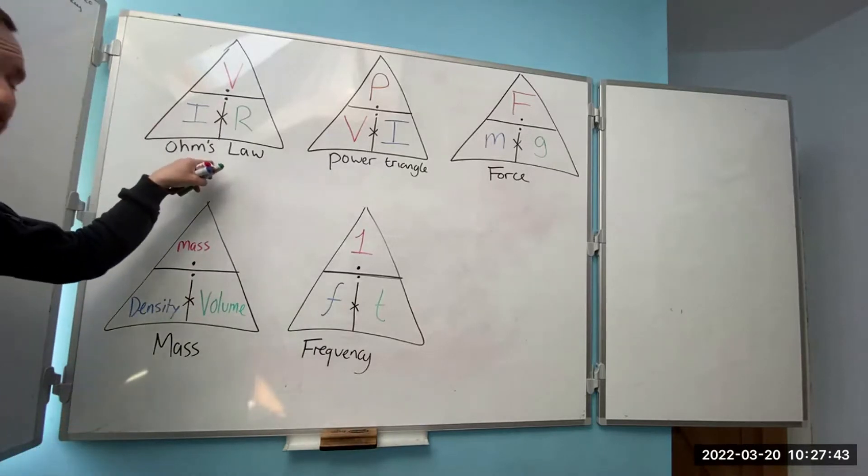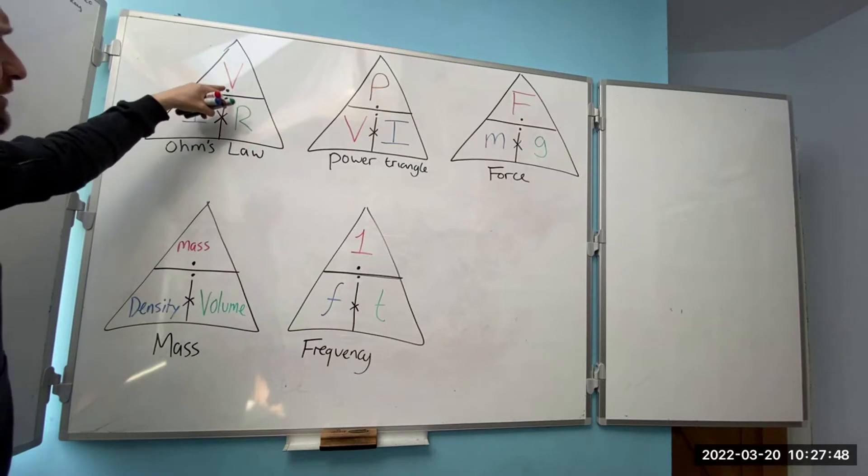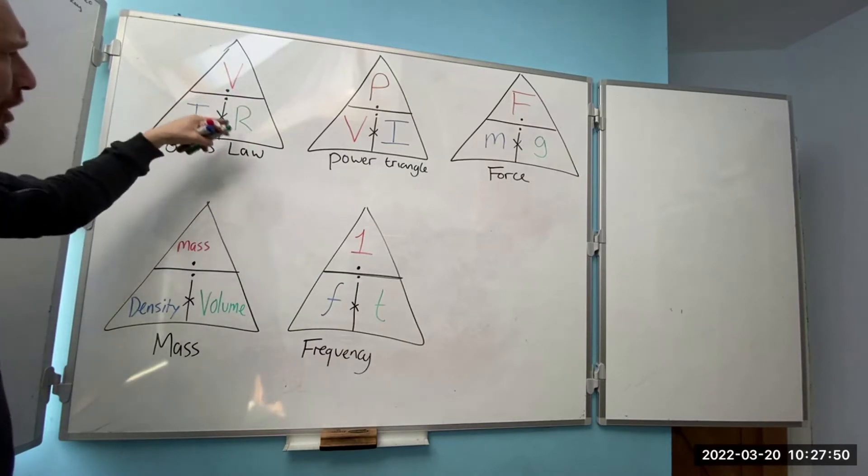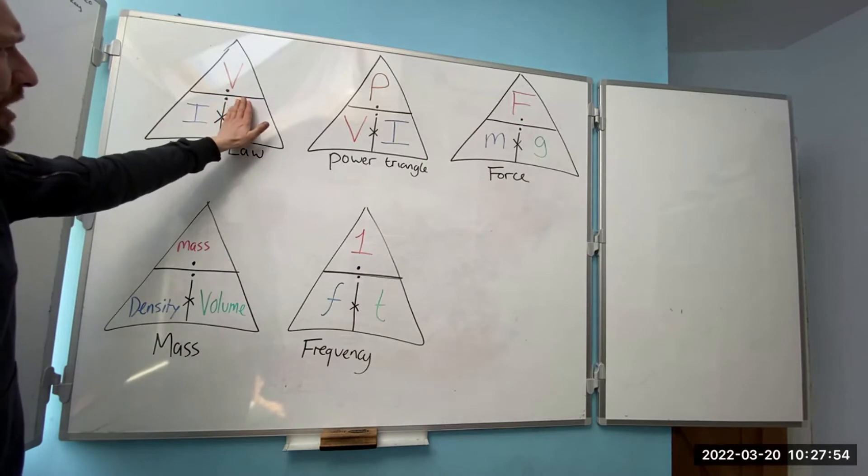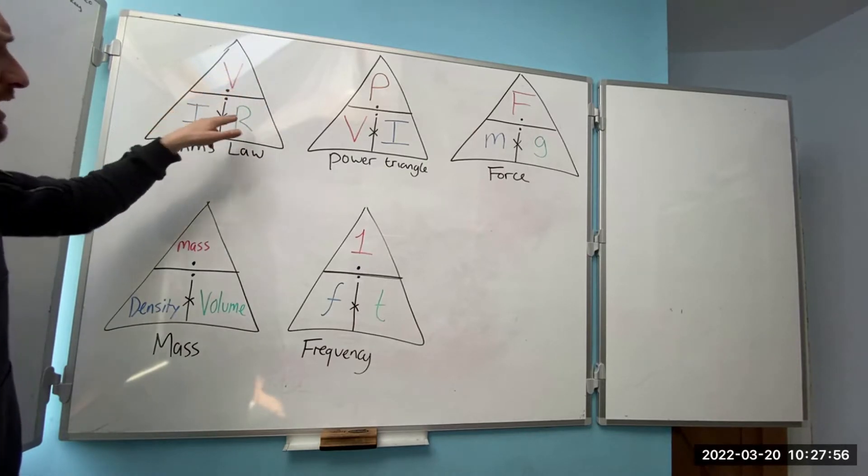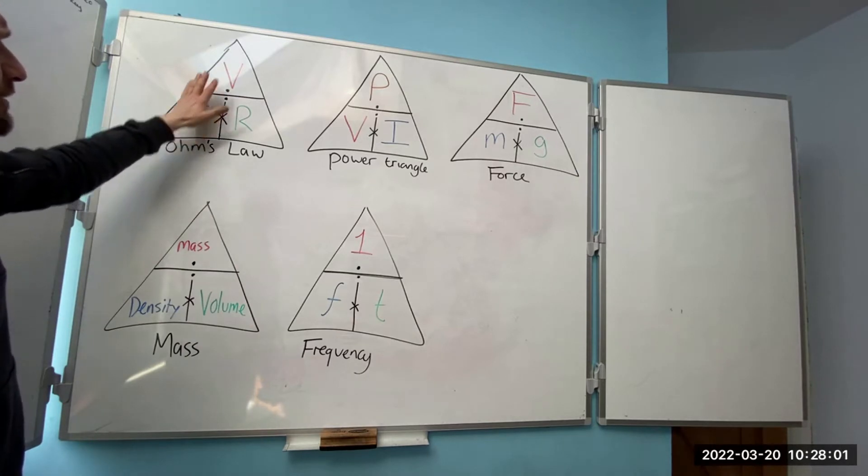You should all know by now the Ohm's Law triangle. We've got V divided by I times R, so I've just put the divide symbol in there to remind you. If you're looking for resistance, you put your hand over R. V divided by I equals R. If you're looking for current, you put your hand over the current. V divided by R equals current.